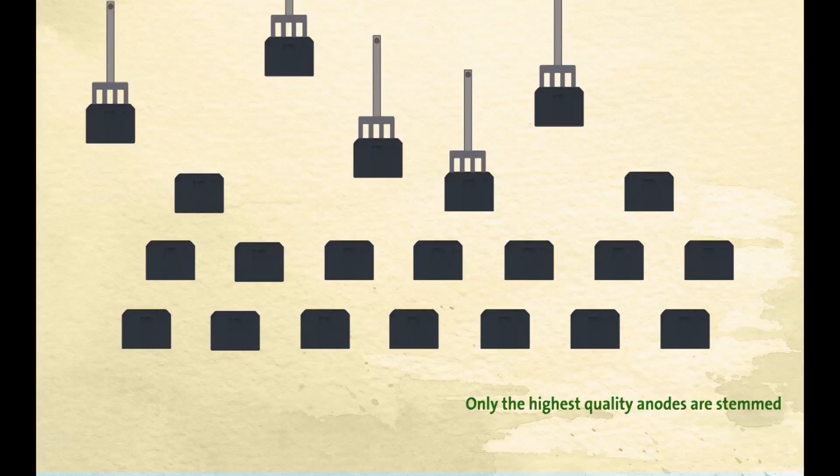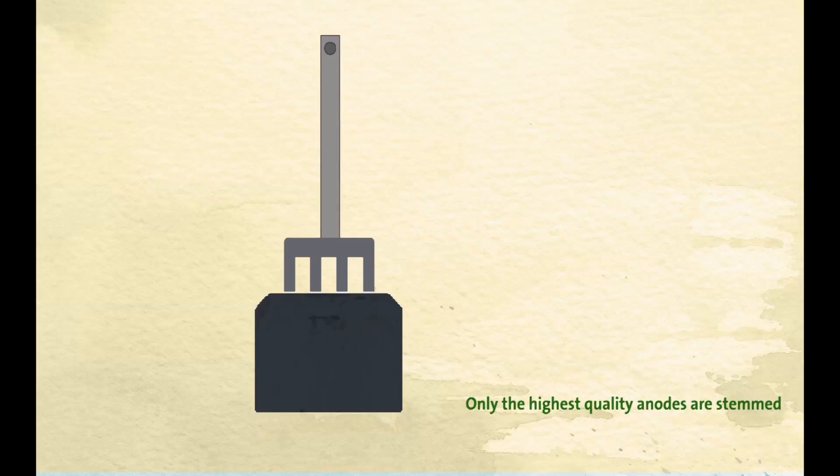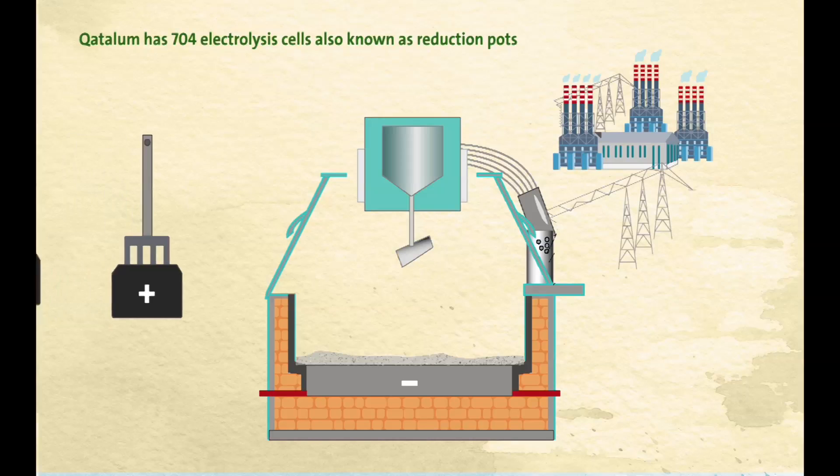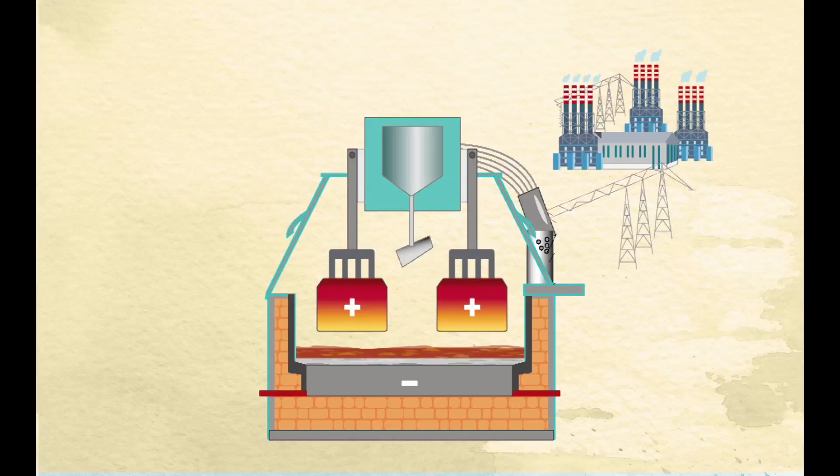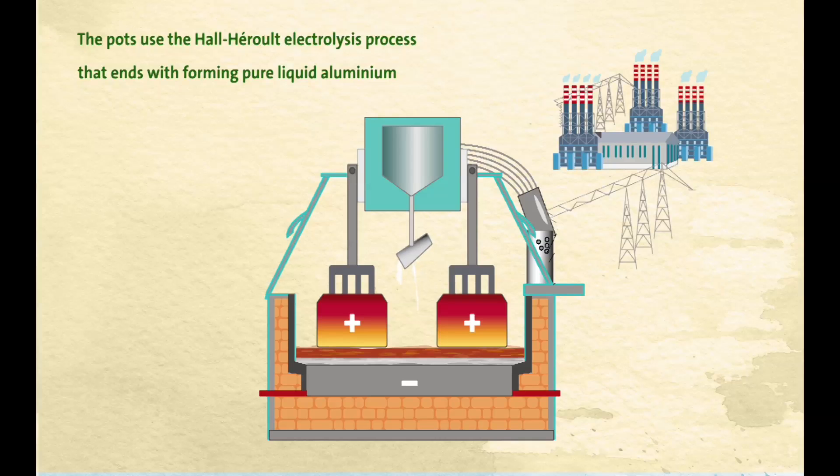Only the highest quality anodes are stemmed for use within an electrolysis cell. Qatalum has 704 electrolysis cells known as reduction pots. These pots reside equally between two pot lines approximately 1.2 km long.